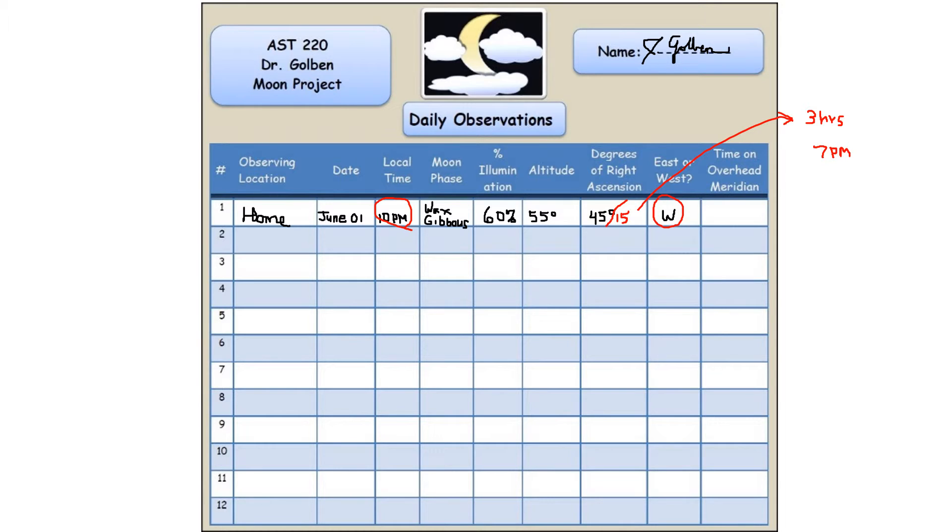I need to correct for daylight savings time. If my measurement were between the beginning of March and the beginning of November, then I'm on daylight savings time and I need to subtract another hour. If I'm between November and March, then there is no correction. That puts me at 6 p.m.